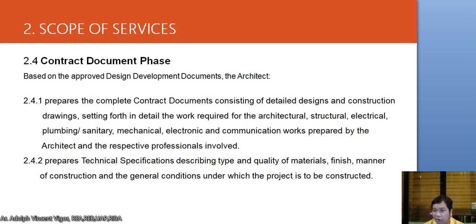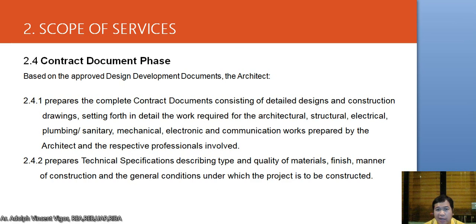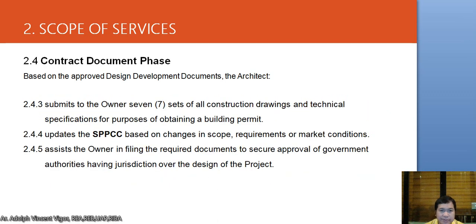In the Contract Documents Phase, based on approved design development documents, the architect prepares complete contract documents consisting of detailed designs and construction drawings setting forth the work required for the architectural, structural, electrical, plumbing, sanitary, mechanical, electronic, and communication systems, involving the respective professionals. The architect also prepares technical specifications describing the type and quality of materials, finishes, and other general conditions under which the project is to be constructed.